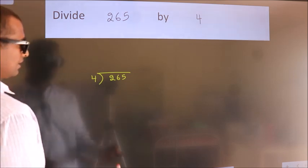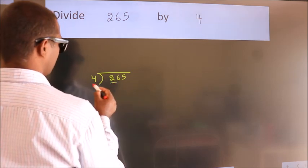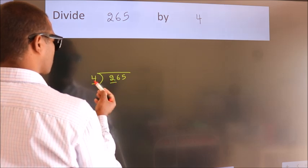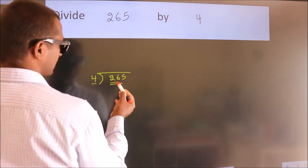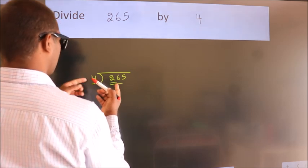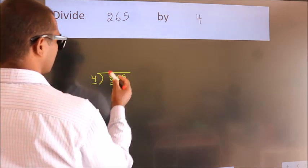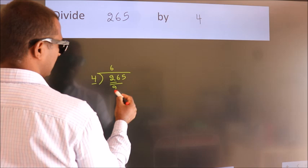Next, here we have 2, here 4. 2 is smaller than 4, so we should take 2 numbers: 26. A number close to 26 in the 4 table is 4 times 6, which is 24.